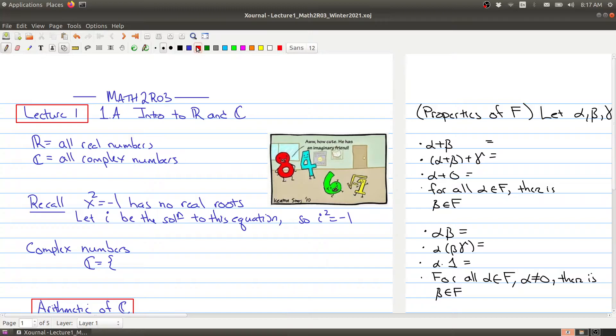So the complex numbers, one way to think about it, is it's all numbers of the form a plus bi. So here I can write it a little bit more concisely in terms of set notation: a plus bi where a and b are allowed to be any real numbers.